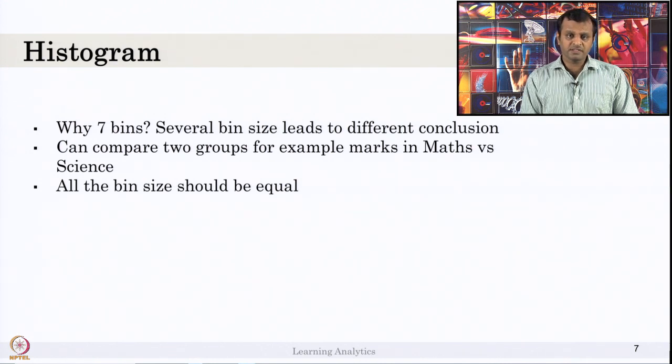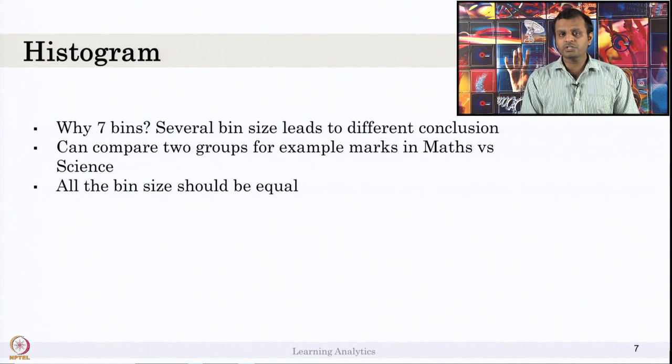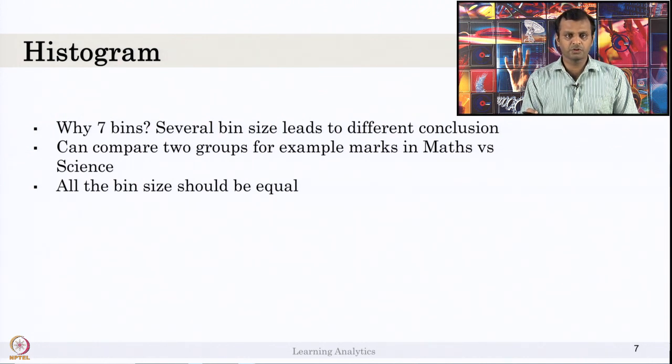If you have several bin sizes, say instead of 7 if I want to use 10 bins or if you have 10 I want to use 5 or 3 bins, the conclusion might differ. Suppose you might say that a lot of students scored less than 40, or a lot of students who are in the range of 50 to 70 now might have moved to less than 60 and more than 70 to 80. Conclusion and inference might vary based on the bin size also.